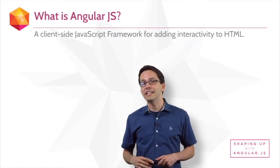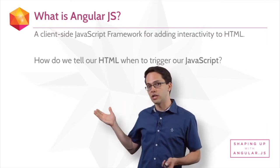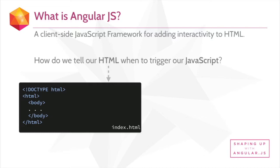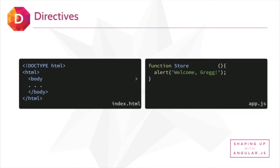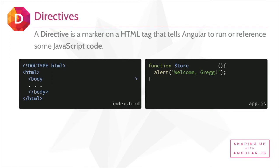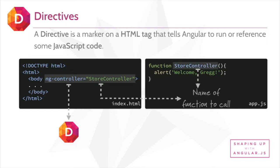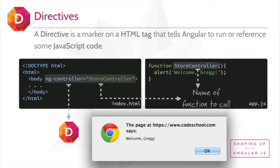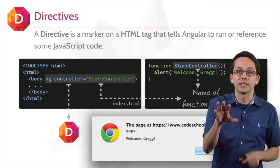A simple definition of Angular is a client-side JavaScript framework for adding interactivity to HTML. We need to figure out how to tell our HTML when to trigger our JavaScript. In Angular, we add behavior to our HTML through directives. A directive is a marker on an HTML tag that tells Angular to run or reference some JavaScript code. So the answer here is to add the attribute ng-controller to our body tag, setting it equal to storeController, which is the name of our function. And if we loaded this up, we might get an alert. Obviously this is a contrived example, but you get the gist of it — directives are how we bind behavior.